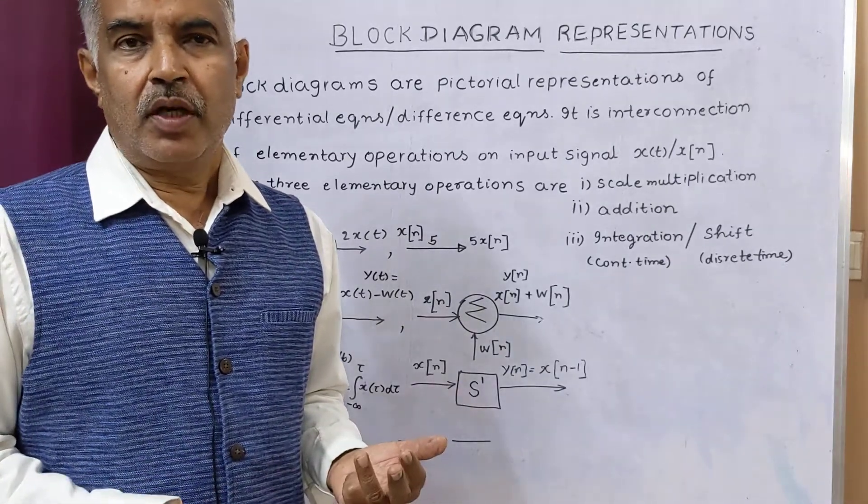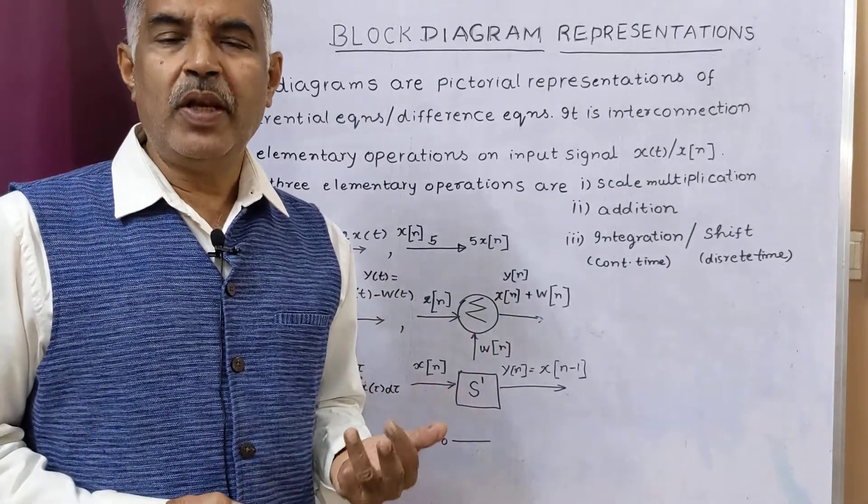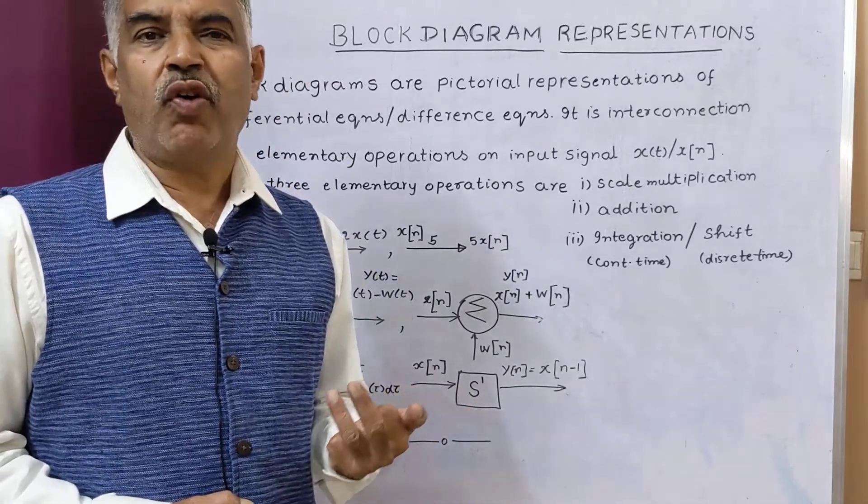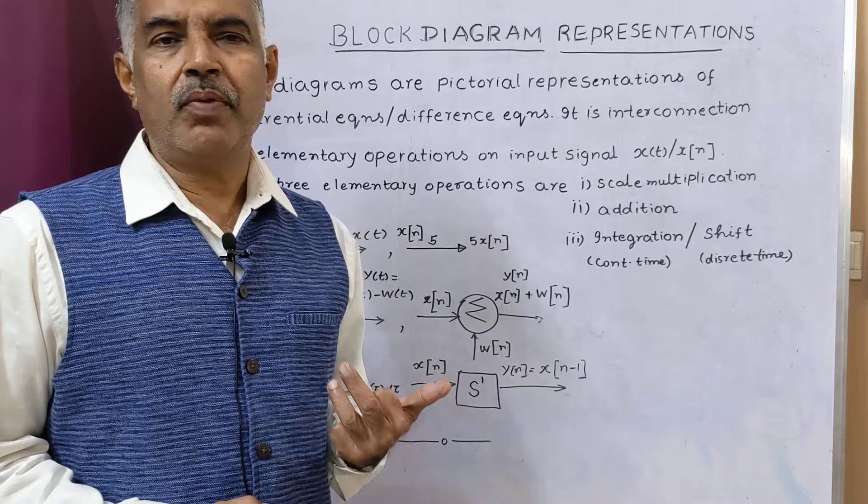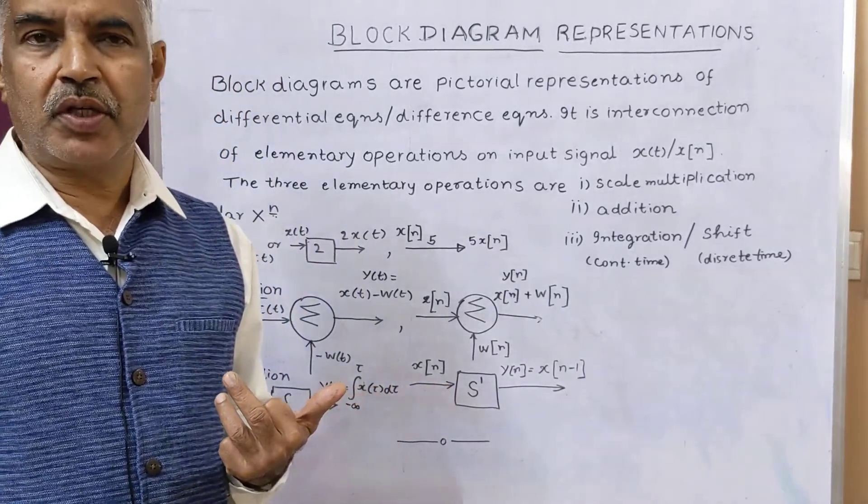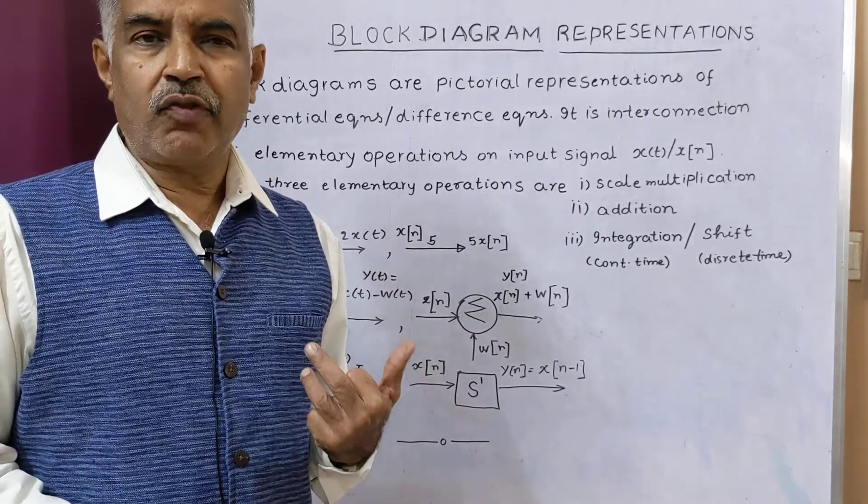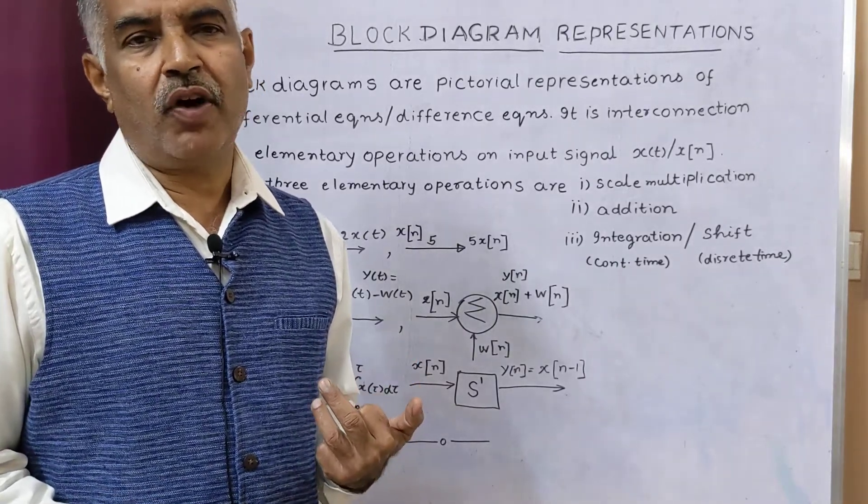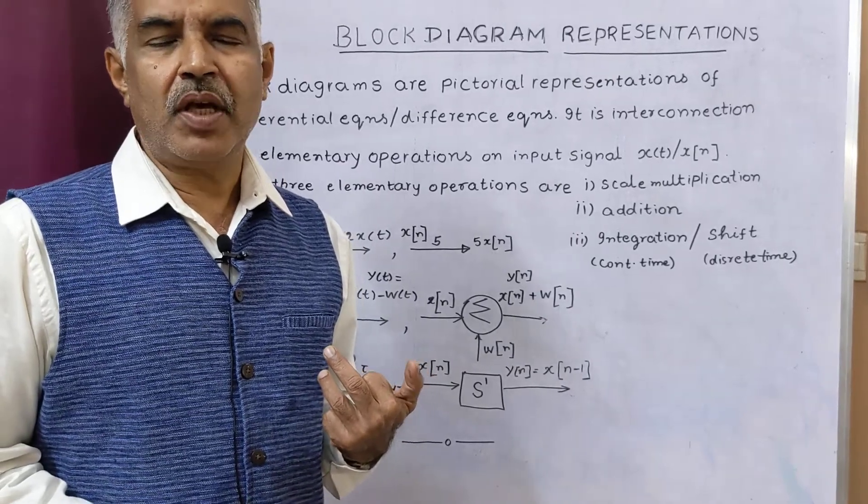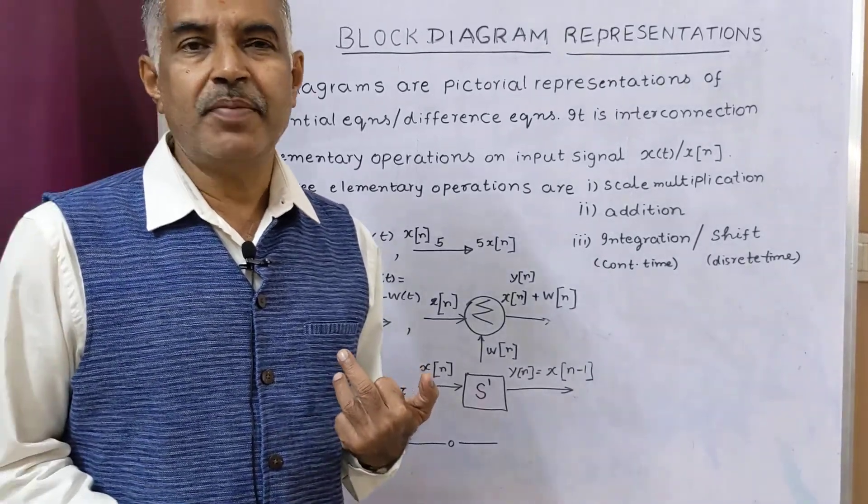Number two, there are two popular forms of block diagrams, direct form one and direct form two. So students are required to construct block diagrams either in direct form one or direct form two for either continuous time systems or discrete time systems.